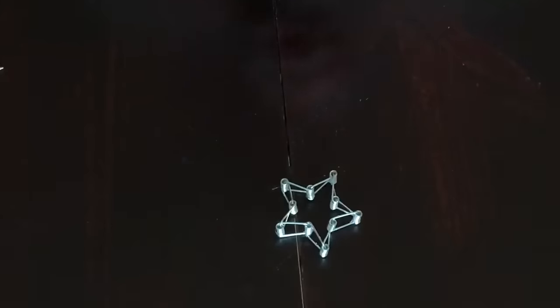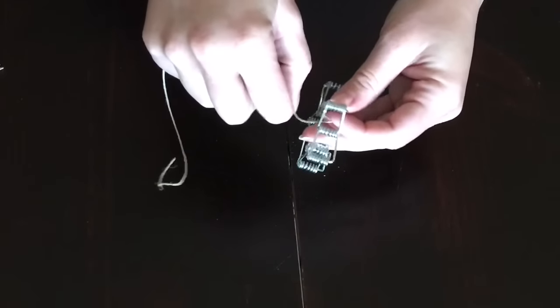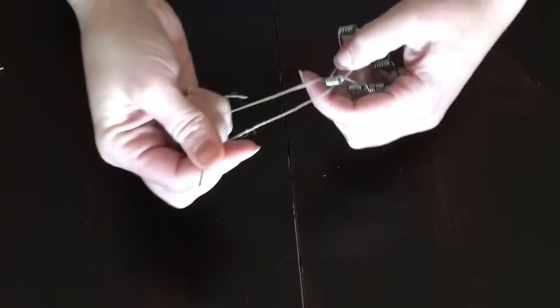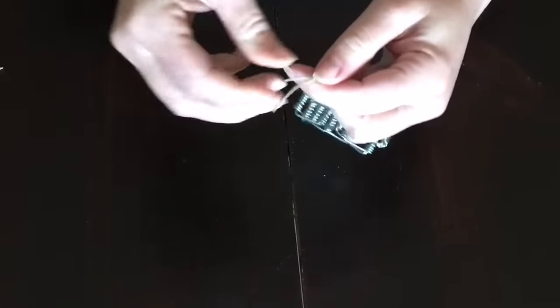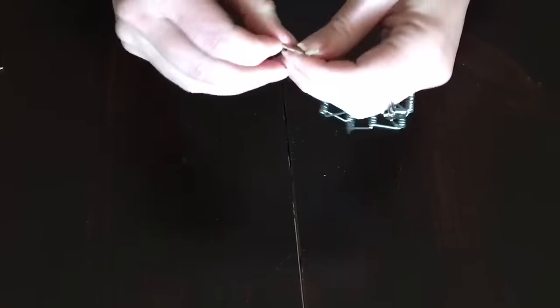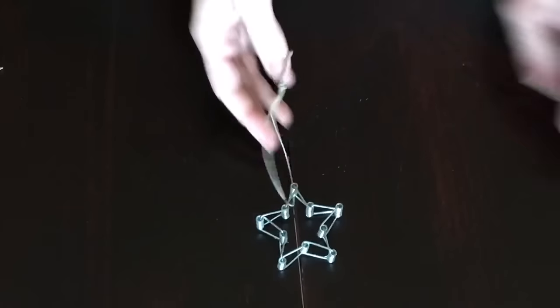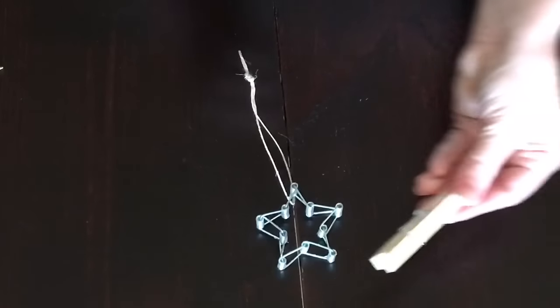You could spray paint these or add an antiquing medium, any kind of anything to them, or you can just leave them this way. We're going to add a little piece of twine to be able to hang it from our tree. And there you go.